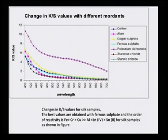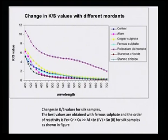For silk samples, the same exercise was carried out without tannic acid, using control, alum, copper sulphate, potassium dichromate, stannous chloride, and stannic chloride. It was found that the best color strength value for silk was obtained with chromium. The K/S value and C-lab values together describe the dye — C-lab values give the color description while color strength gives the dye depth.